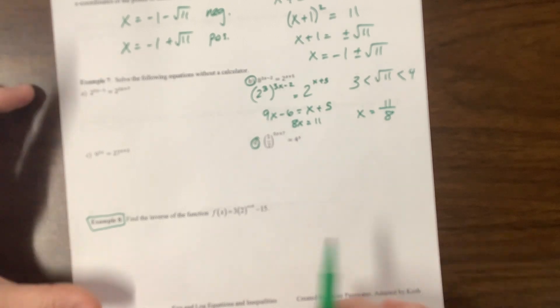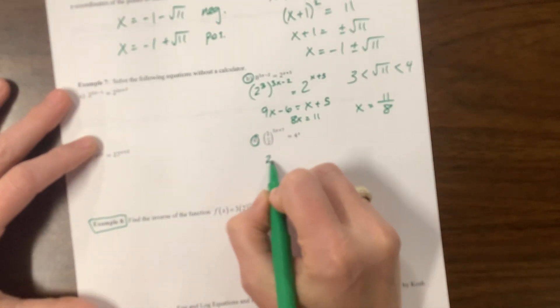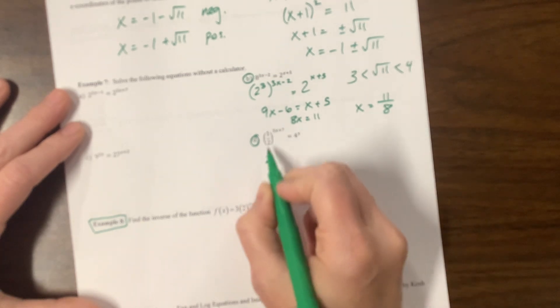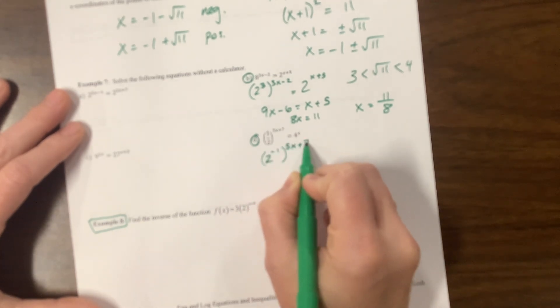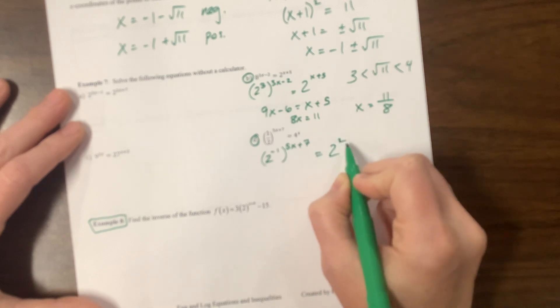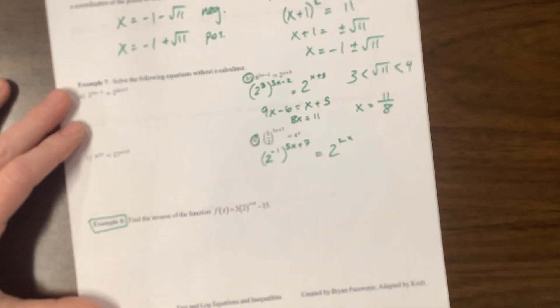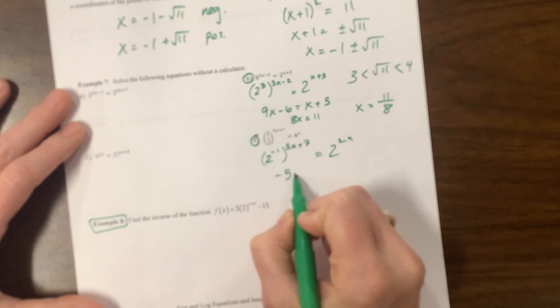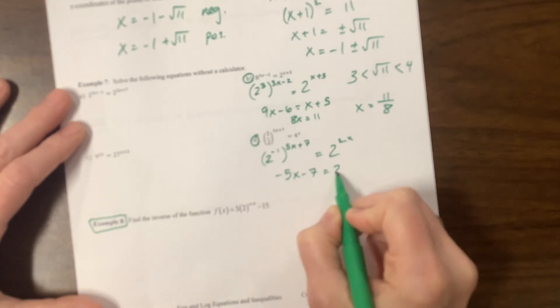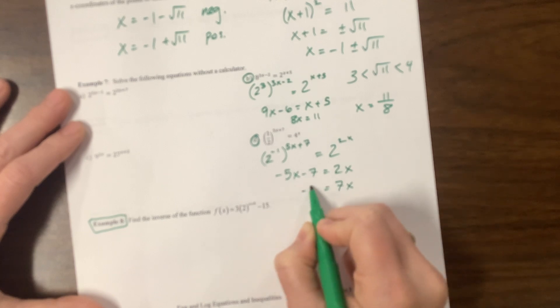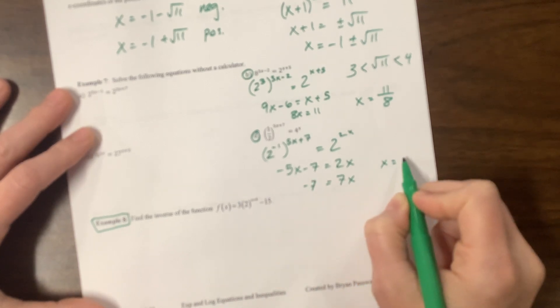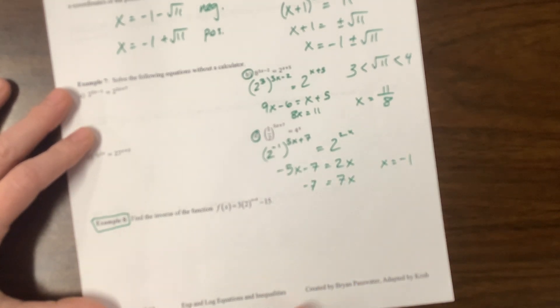The next one, similar. All four of these are kind of similar. But on this one, I see one half, which is 2 to the negative 1, to the 5x plus 7. And then I see four, which is 2 squared. So 2 to the 2x is how that simplifies. So I get a negative 5x minus 7 equals 2x. I can add this over here. I get 7x is equal to negative 7. Therefore, x would equal negative one.